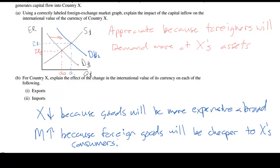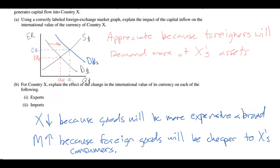A strong currency — an appreciation — may sound like a good thing for a nation's economy. However, the stronger a country's currency becomes, the less export revenue it earns from selling goods abroad, and the more its consumers will spend on imports since they appear cheaper. Now for point estimates: part A is worth at least three points since it requires a correctly drawn graph and an explanation of what happens to the currency's value. Part B may be worth four points — two for explaining exports decrease and two for explaining imports increase. In total this question is worth approximately seven points.